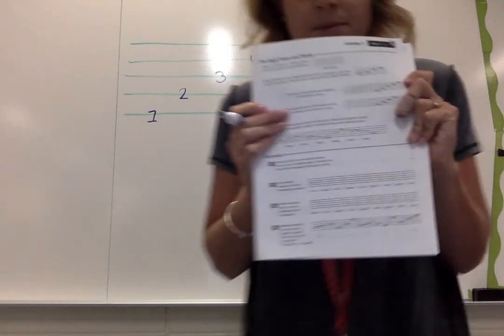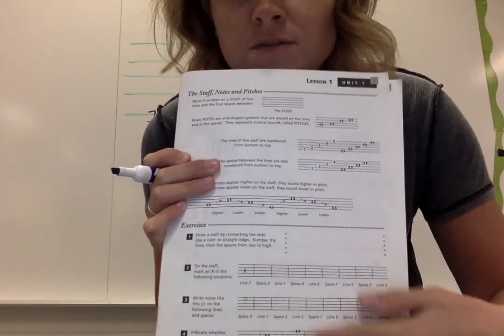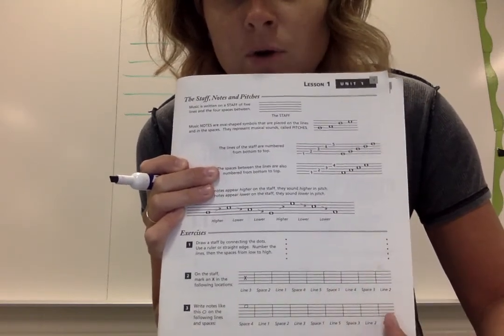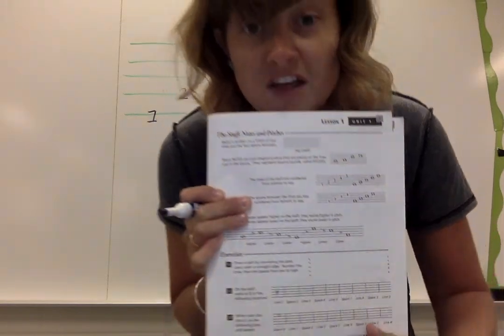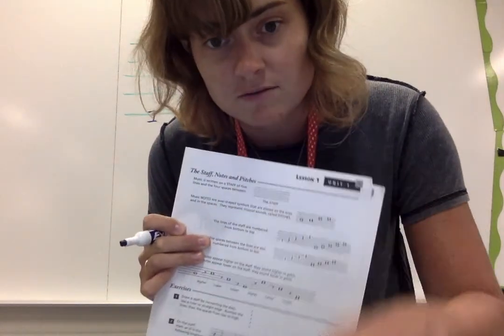So your assignment looks like this, loaded into Notability, and complete all of these parts at the bottom. You're going to have to draw a staff, and then label the staff with some different information, and then get that turned back into me. I'll talk to you guys tomorrow. Peace out. Talk to you soon.